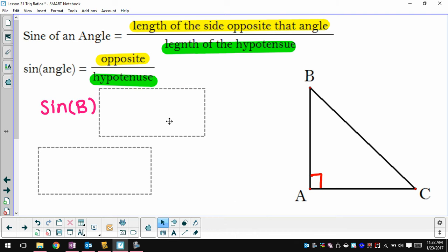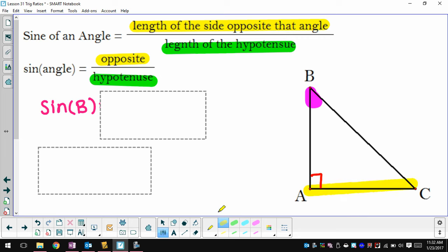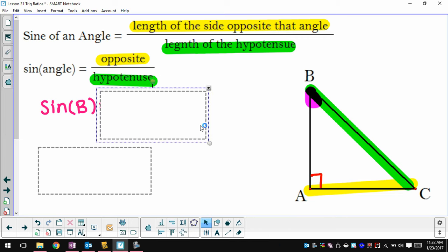So if I want to find the sine of B, I'm going to go look at angle B. The side that's opposite angle B is AC, and the hypotenuse of this triangle is BC. So my sine function for angle B is whatever the length of AC is divided by the length of BC.